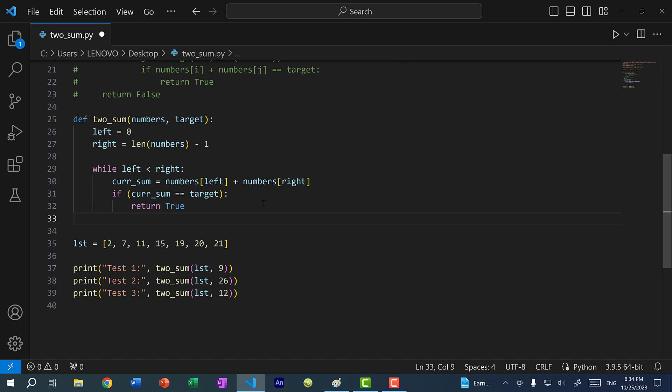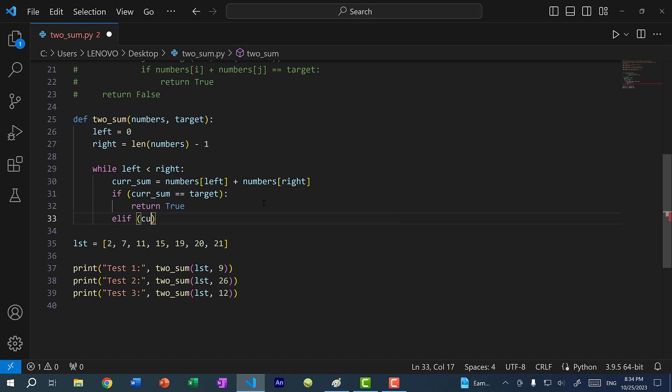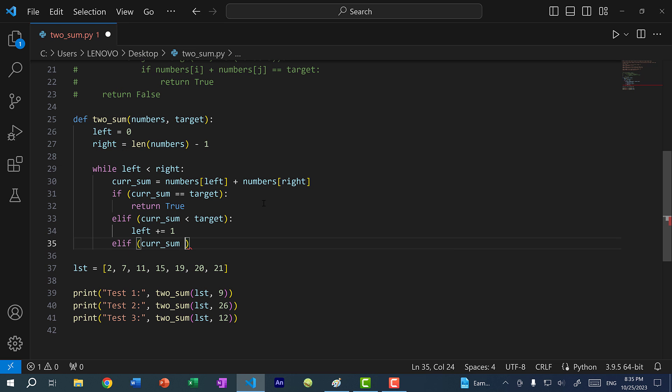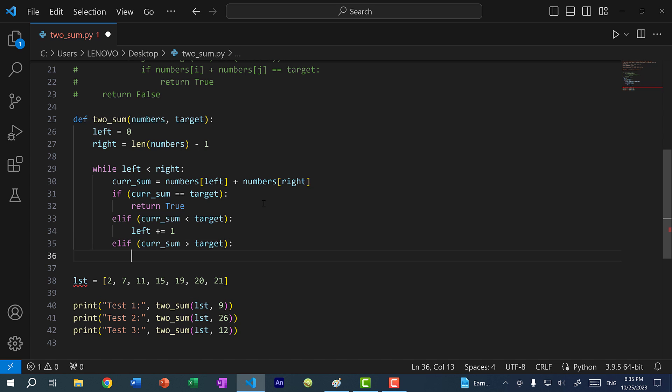If cur_sum is equal to target, we return true. elif cur_sum is less than the target, that means we need to tell the left pointer to move up one. elif cur_sum is greater than the target, so the sum is too big, then we need to make it smaller, so we tell the right side to go down one. Since we are moving the left up or the right down, eventually they will cross path. If that happens, we exit the while loop and we return false.